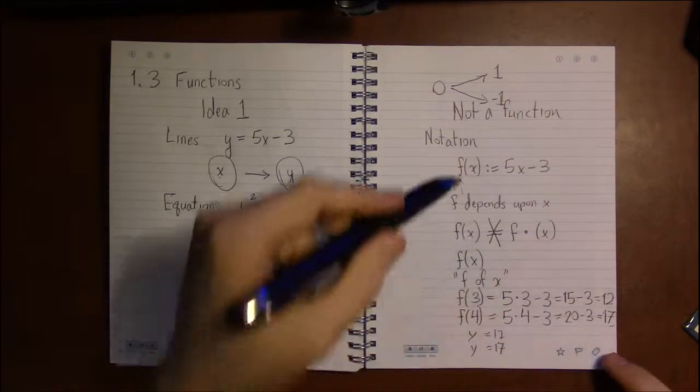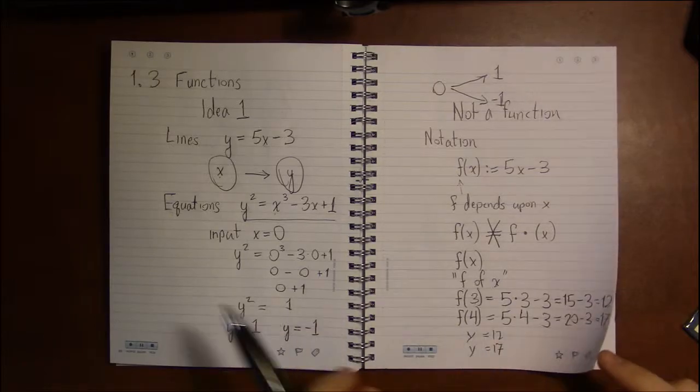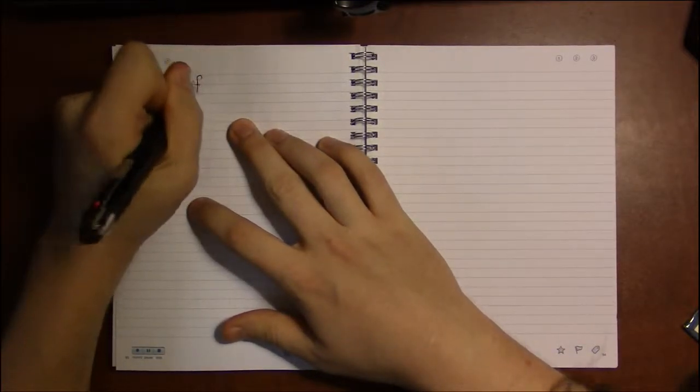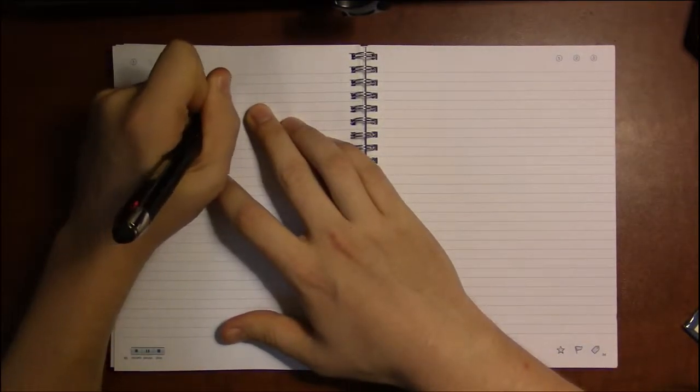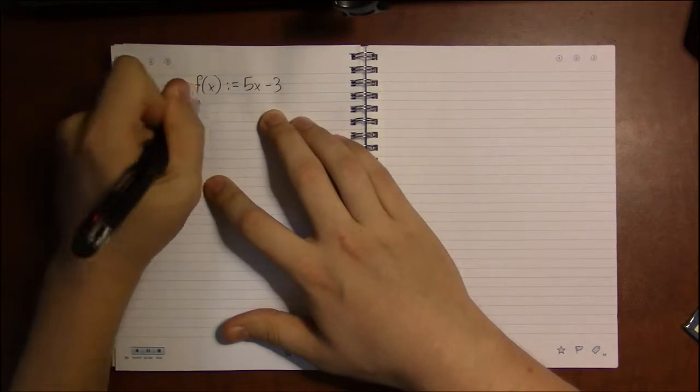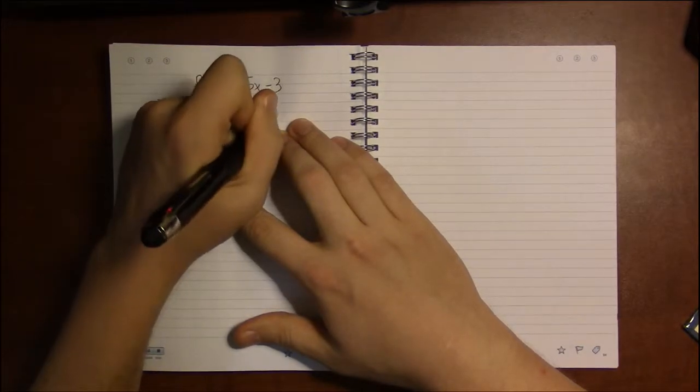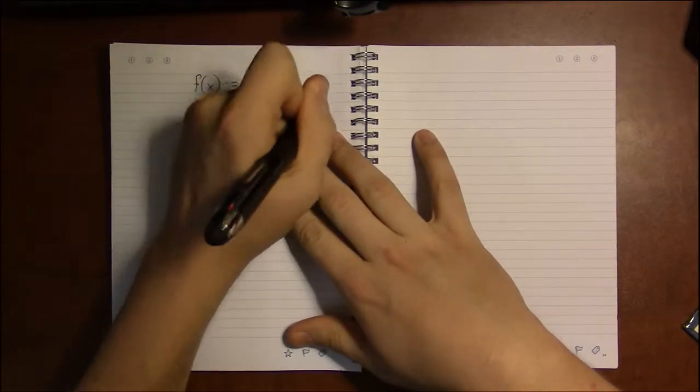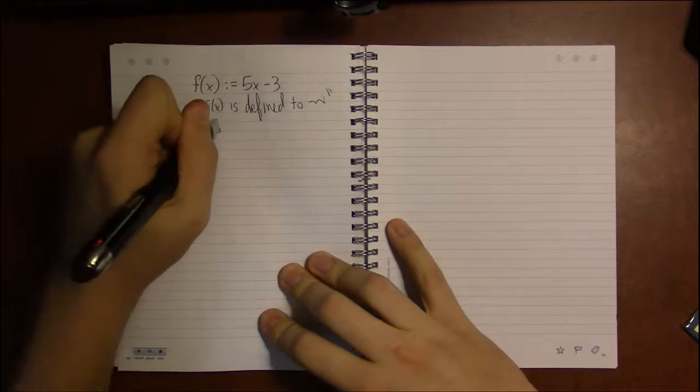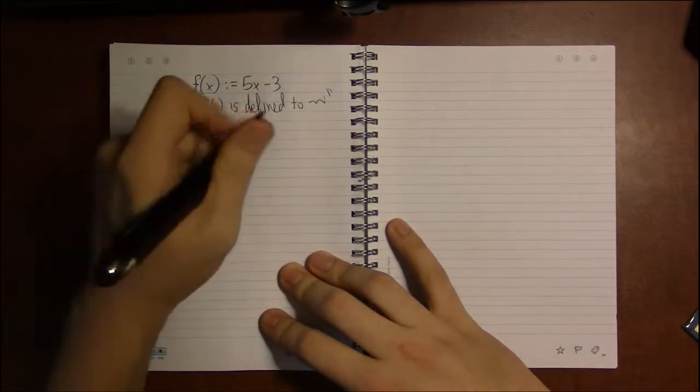So I'm really pushing this dependence, this relationship between two variables. The other thing I want to emphasize is this colon equals. I will use this to mean that the function f of x is defined to be whatever—in this case, five x minus three. So in other words, there's nothing to solve here. I'm just declaring, I'm giving a name to this expression.